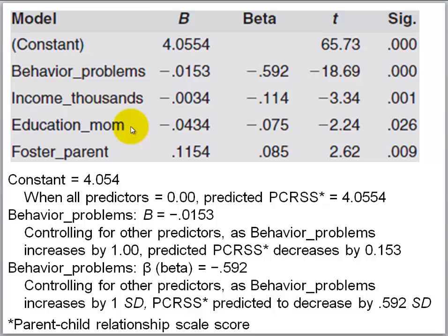Let me interpret the coefficients for education mom. Mom's education is measured on a five-point scale where the lowest value conveys not completing high school and the highest value conveys graduate school. As mom's education increases by one point on that scale, the predicted score on the parent-child relationship scale — with possible scores ranging from 1 to 4 — decreases by 0.043 points.